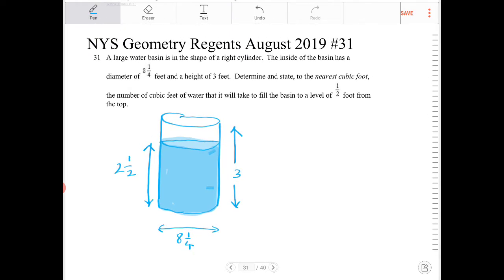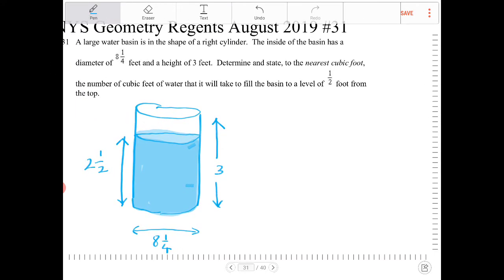So we need to find the volume of the water that's in the tank. And to find the volume of any kind of prism, which a cylinder is a prism, the volume is always going to be the area of the base times the lateral height.